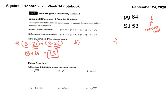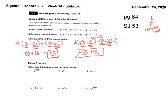To subtract complex numbers, we'll do that same problem. You are going to subtract like terms. 5 minus 8 is negative 3. 2i minus negative 2i — that's the same thing as 2i plus 2i, which is positive 4i. This is called complex form. A plus bi is complex form. The i should always be second.